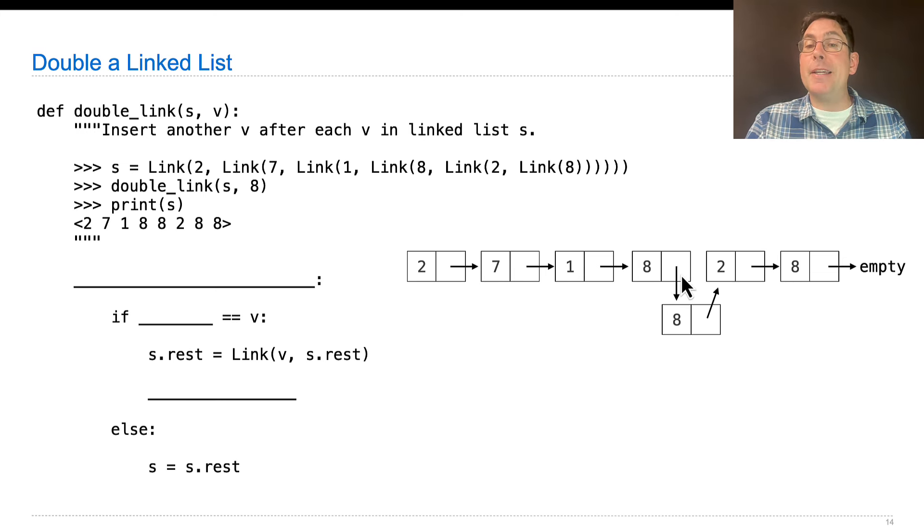Well, you build one that has the same rest of the list, but you assign the current s's rest to that new link, so that now you get 2, 7, 1, 8, 8. That's what this line of code does here. Build a new link, set it up so that it has the same continuation, the 8 in the front, and then install it in the linked list by setting s.rest equal to that new link. That creates this arrow here.